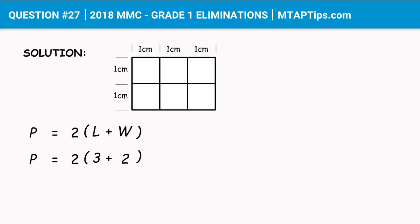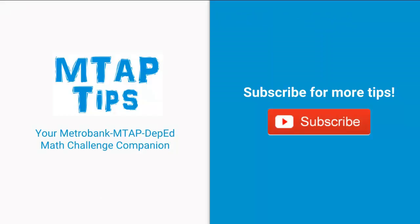Computing: three plus two equals five, times two gives us P equals ten. So the perimeter of the rectangle is ten centimeters.